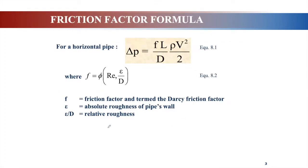The friction factor formula for a horizontal pipe is: delta P equals F times L times rho times V squared over D times 2. Here, F is a function of Reynolds number and relative roughness, where epsilon over D is relative roughness. If you only have epsilon, that is absolute roughness. Be careful — the question may give you relative roughness or absolute roughness. If the question gives absolute roughness, you must divide by the pipe's inner diameter.